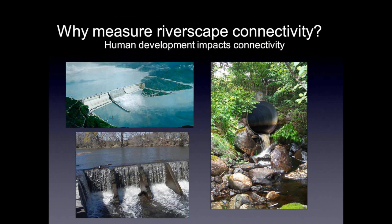So let's begin with: why should we measure riverscape connectivity? Because that's really what this work over the past few years has been about. As we all know, human developments on aquatic systems — whether those are large-scale dams, smaller low-head dams, or culverts — can impact the connectivity of a stream or river system. These barriers can have all kinds of effects. They can affect the productivity of the aquatic ecosystem and the species composition, both upstream and downstream of the barrier.